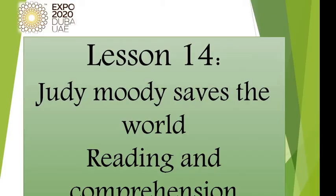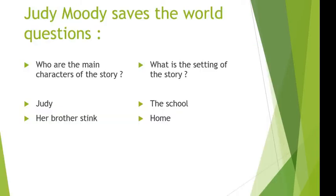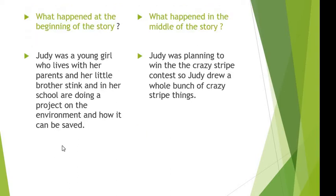This is the end of the vocabulary PowerPoint presentation. Let's move on to read and answer some questions about the story Judy Moody Saves the World. The first question is: who are the main characters of the story? It will be Judy and her brother Sting. What is the setting of the story? It will be at home or at the school. What happened at the beginning of the story? Judy was a young girl who lives with her parents and her little brother Sting, and in her school they are doing a project on the environment and how it can be saved.